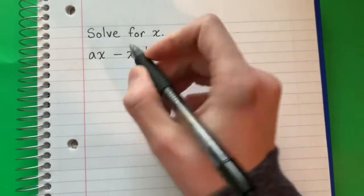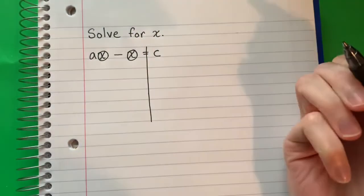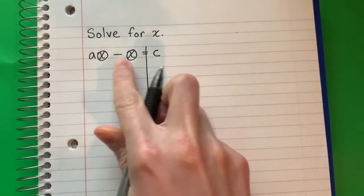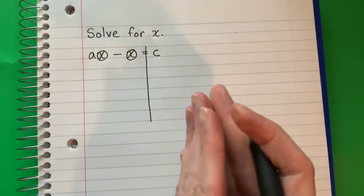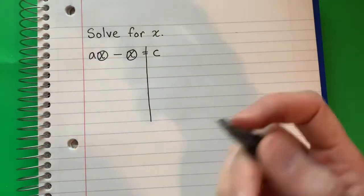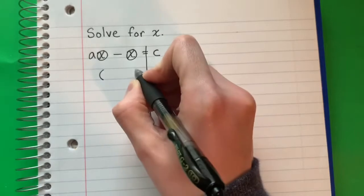I want the X alone, so I'm going to circle the X's. I have a problem - there are two X's. What I'm going to do is separate the X's by using parentheses.